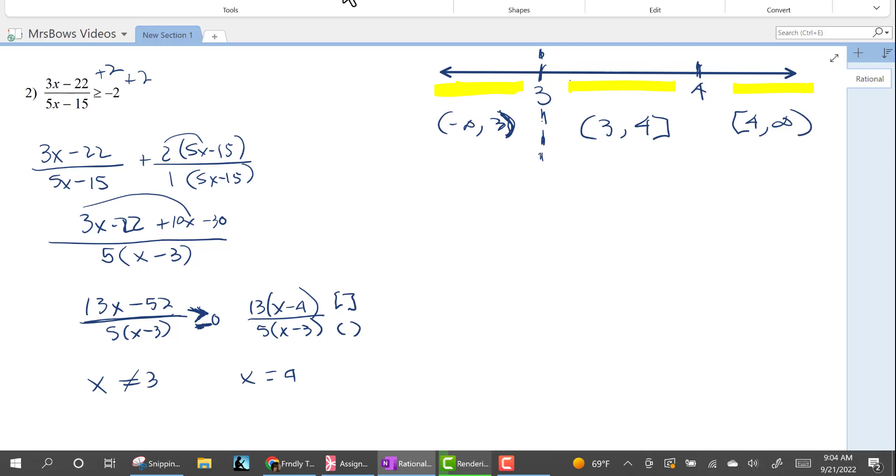All right, so now we're going to pick our easy values. So the easiest number less than 3 is 0. The easiest number greater than 4, I choose 10 because it's really easy to work with 10. This is going to be a pain, but 3.5. All right, and I'm going to use this version.